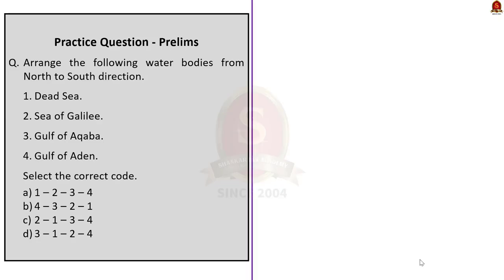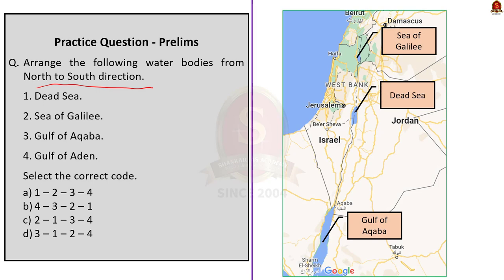Our next question is a map-based question where four water bodies are given and we have to arrange them in north-to-south direction. From the map, the northernmost is the Sea of Galilee, then the Dead Sea, then the Gulf of Aqaba. The southernmost is the Gulf of Aden, located between Yemen and Somalia. The correct answer is option C — 2, 1, 3, 4.